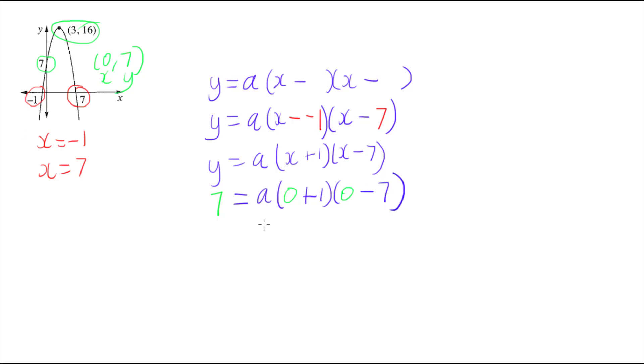And now I just need to solve this equation for a. So let's deal with these timesing on the right-hand side here first. So I have 7 equals a, and that's going to be times by 0 plus 1, well that comes down to just being 1, 0 minus 7, well that's minus 7, 1 times negative 7 is negative 7.